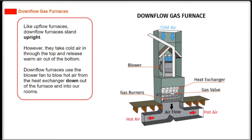Like upflow furnaces, downflow furnaces stand upright. However, they take cold air in through the top and release warm air out of the bottom. Downflow furnaces use the blower fan to blow hot air from the heat exchanger down out of the furnace and into our rooms.